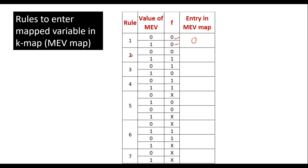Rule 2: if the value of MEV and the function are the same — that is, when MEV is 0, function is 0, and when MEV is 1, function is 1 — in that case we directly enter the variable V (where V represents the variable). Whatever variable we have considered, we enter that variable in the MEV map.